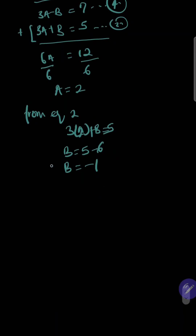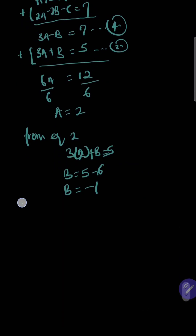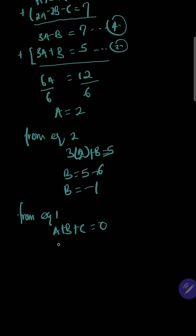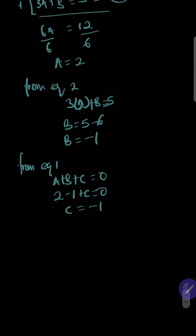And also to get C: using Equation 1, we have A plus B plus C equals 0. My A is 2, my B is negative 1, so 2 minus 1 plus C equals 0, meaning C is also negative 1.